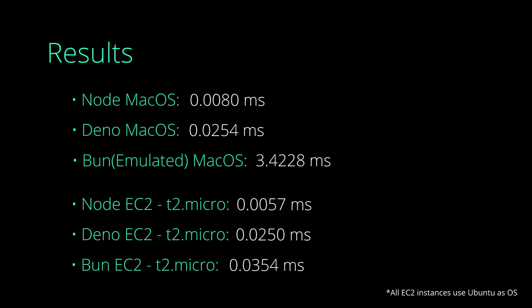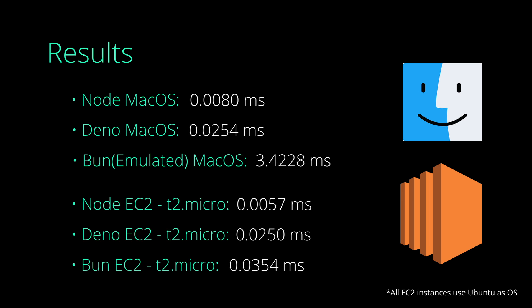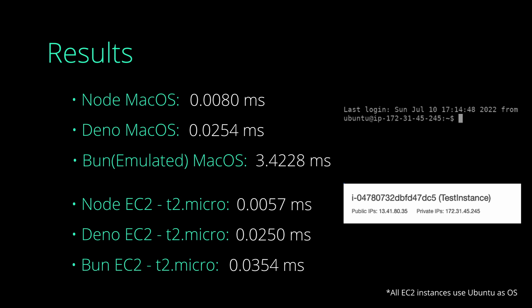I ran tests on two different machines: one on my Mac, and another on a T2 micro instance on AWS EC2. I did that because my MacBook is pretty old and does not support the AVX2 instruction set, which is a problem because without it Bun does not work properly. Therefore I needed to use emulation, and as you've guessed, it showed up in the results. So to compensate, I fired up an EC2 instance and ran the same test there. This time the results are significantly closer to each other, however there is still no massive distinction, which makes this test inconclusive.